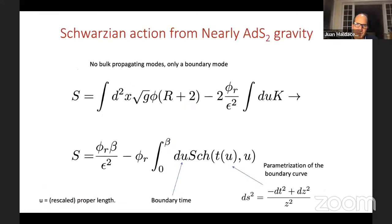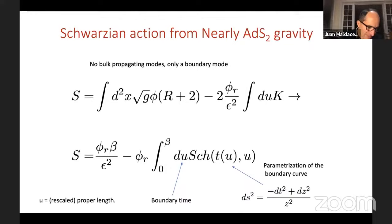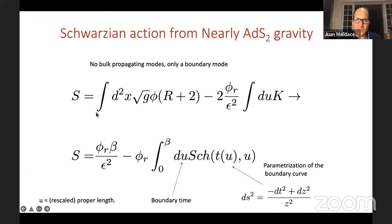There's a question: should we think of JT gravity as an effective 2D theory after compactification from 10D supergravity? Yes — one example would be something like AdS₂ × S² × Calabi-Yau, which is the near-horizon geometry of a black hole. An important point is that once you solve the equation for the dilaton, it's not constant — so the full space doesn't have AdS₂ isometries and cannot be viewed as a pure compactification down to AdS₂. That's why we call it 'nearly AdS₂.'